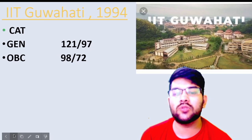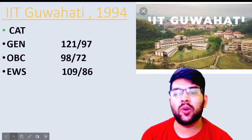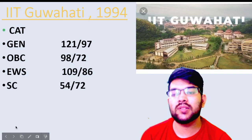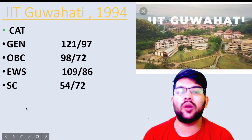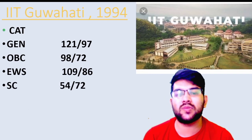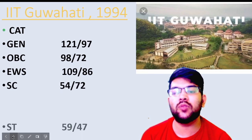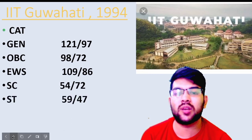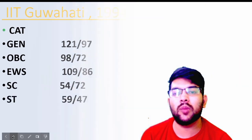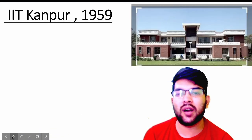So I hope you get my point. For EWS, 109 and 86 marks. For SC category, it is 54 and 52 marks — not 72, it is 52 marks. For ST, it is 59 and 47 marks.